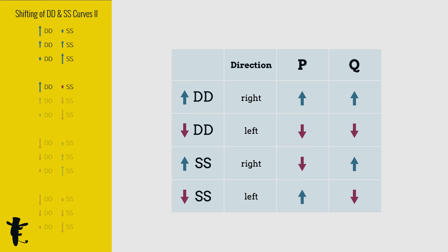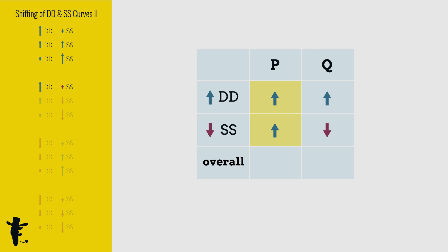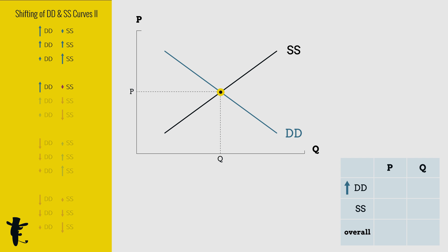What happens when demand increases and supply decreases? Since price increases for both curves, overall price increases. Quantity increases here and decreases here, so we don't really know what's the overall change.